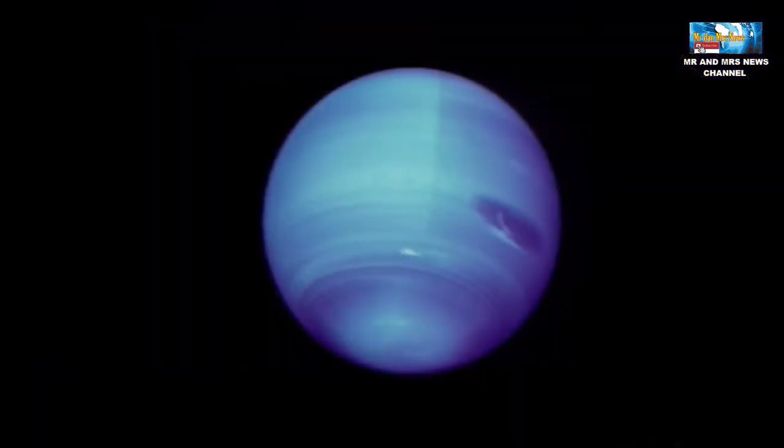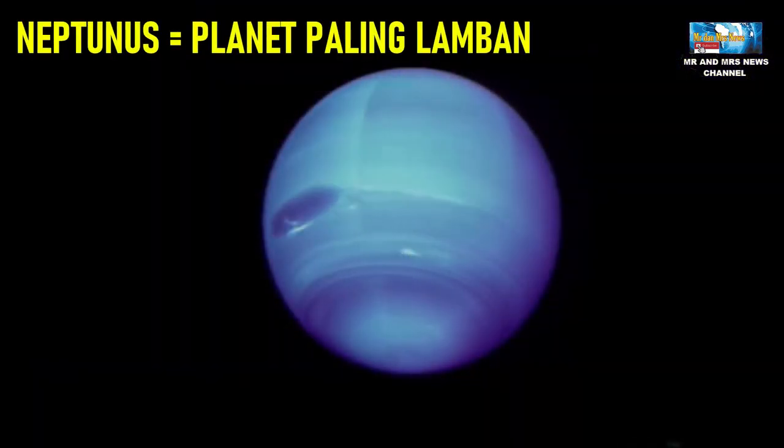Besides being designated as the farthest planet, Neptunus is also the slowest planet. In one orbit, Neptunus takes 164.8 Earth years.